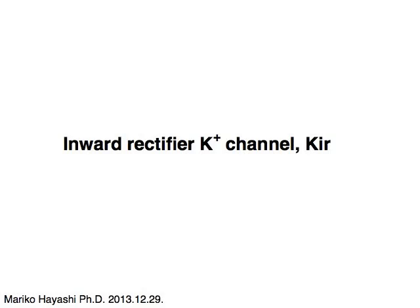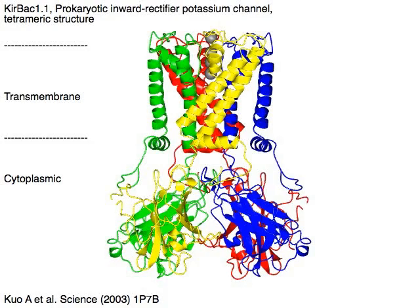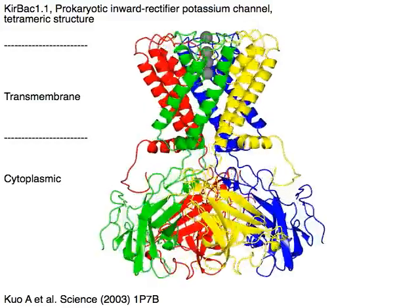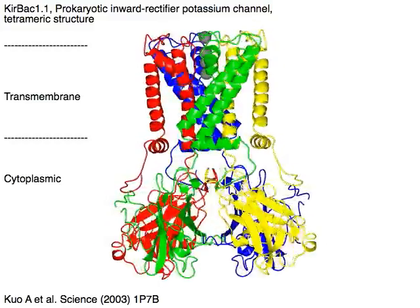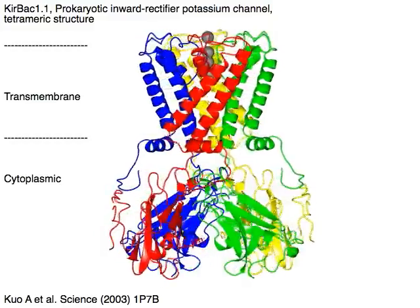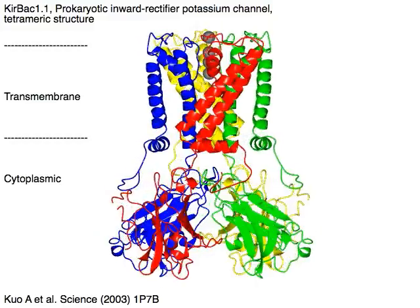Inward rectifier potassium channel, KIR, Kerbog 1.1, a prokaryotic inward rectifier potassium channel, forms a tetramer.